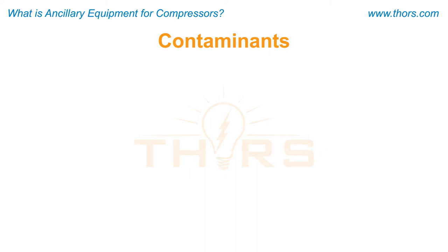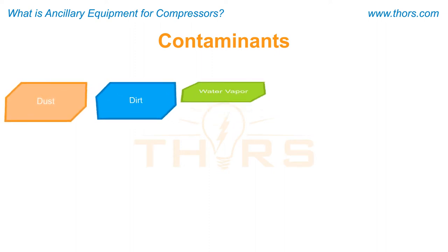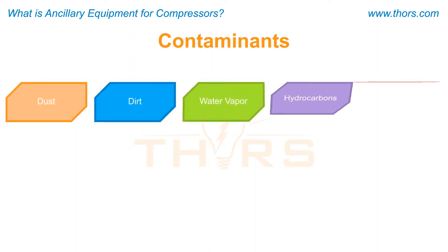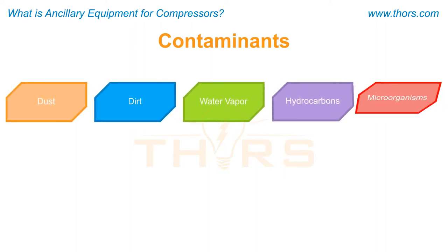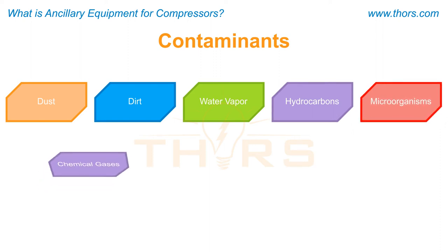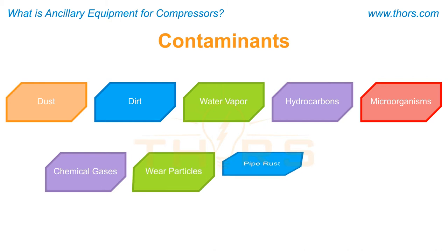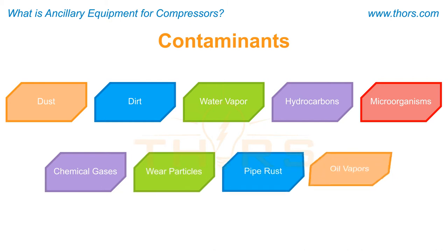Contaminants found in atmospheric air include dust, dirt, water vapor, hydrocarbons, microorganisms, and chemical gases, as well as wear particles, pipe rust, and oil vapors introduced from the compressor and connected piping system.